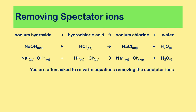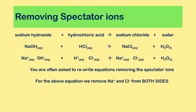You are often asked to rewrite equations removing the spectator ions. For the above reaction, we remove the Na⁺ ions and Cl⁻ ions from both sides. What we are left with is: OH⁻(aq) + H⁺(aq) → H₂O(l).